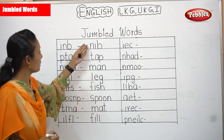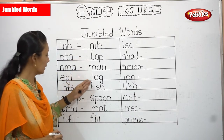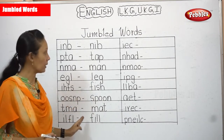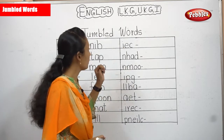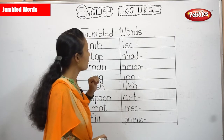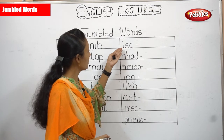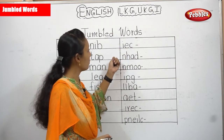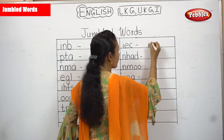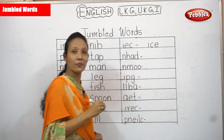So now, here the right words are: NIB, TAP, MAN, LEG, FISH, SPOON, MAT, and FILL. Now what about this word? It is also a small three-letter word. When you see the word itself, you can identify what the word is. I, E, C — no. E, I, C — no. Then I, C, E — yes! ICE.